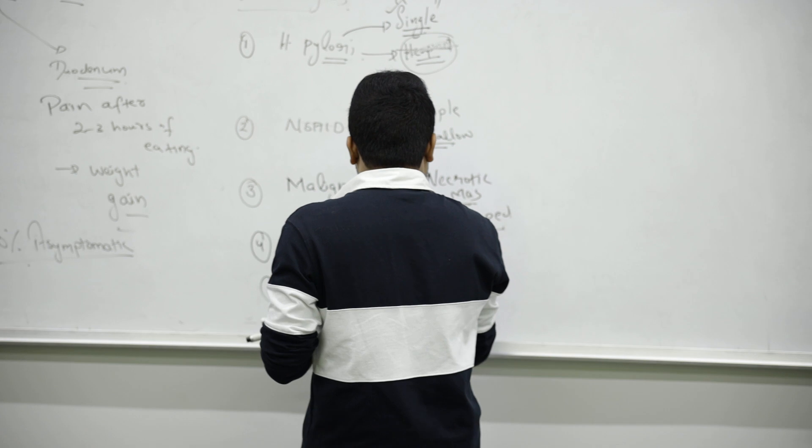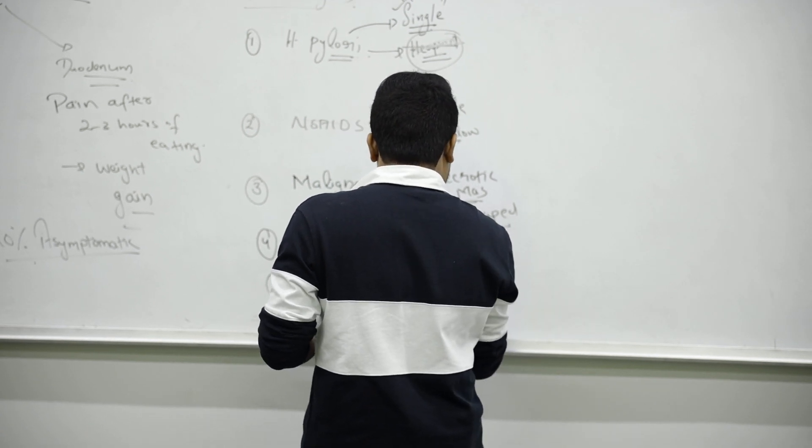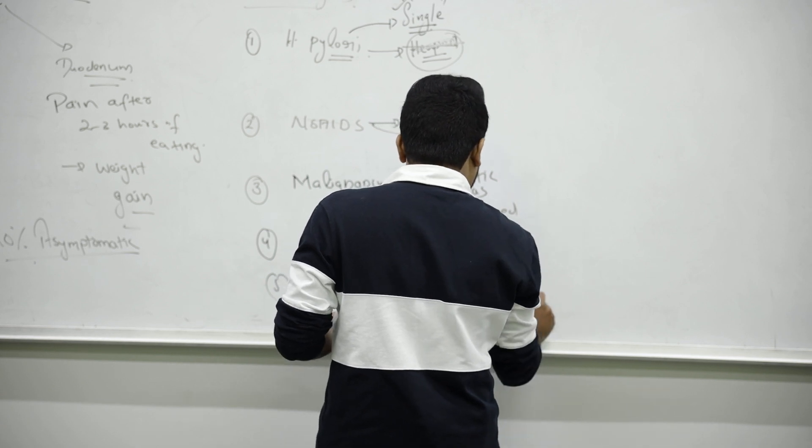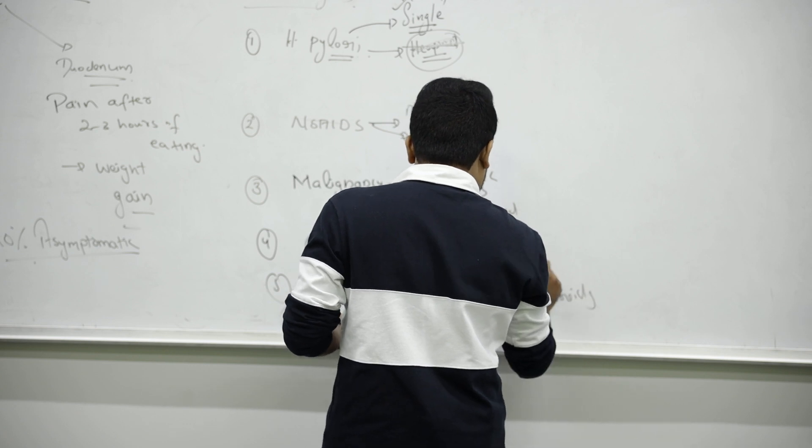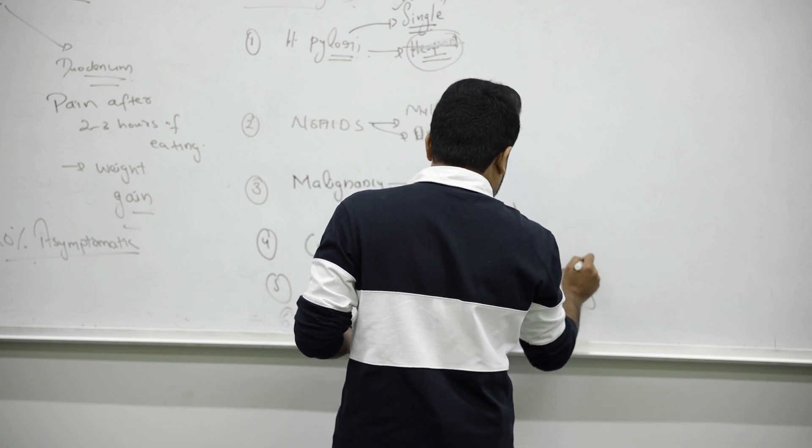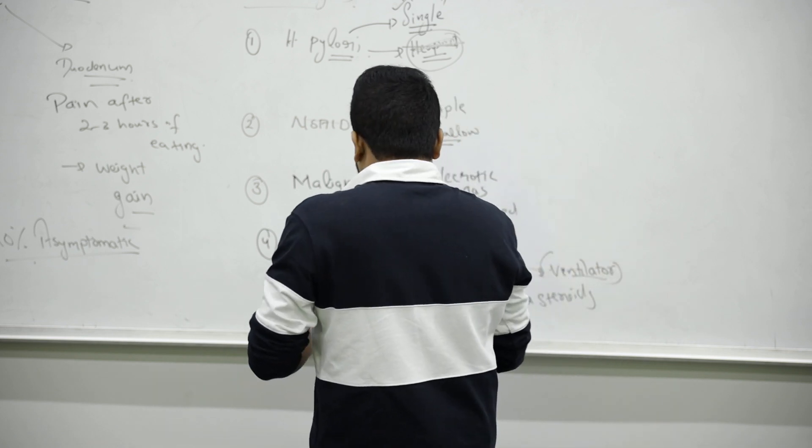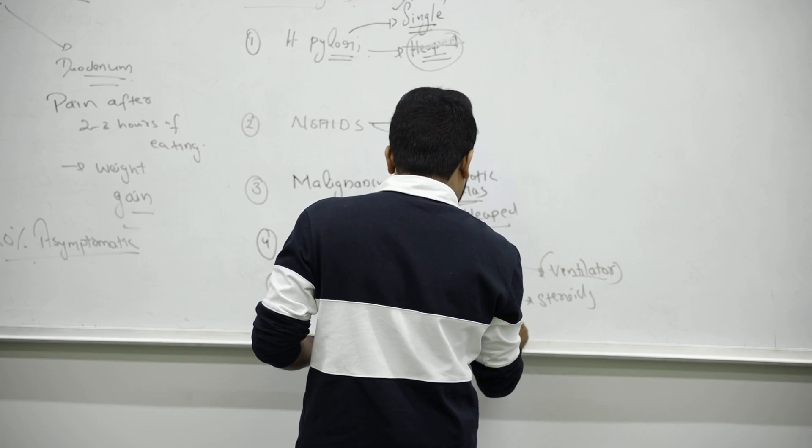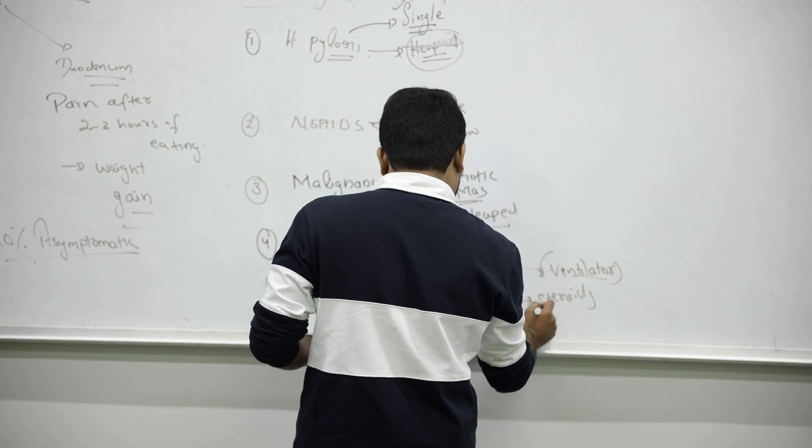Curling is seen in burn patients. Cushing is seen whenever you have intracranial pressure increased or the person who is using steroids for a long time, or patient is in ventilator. Gastrinoma causes a refractory type of ulcer, refractory again and again.